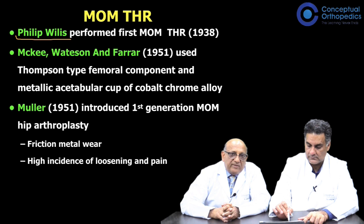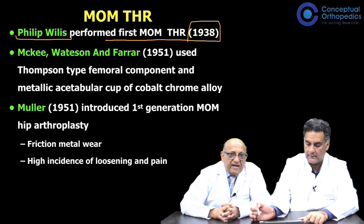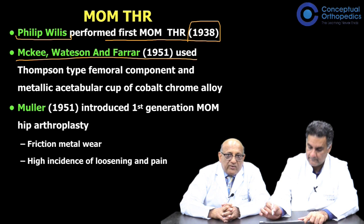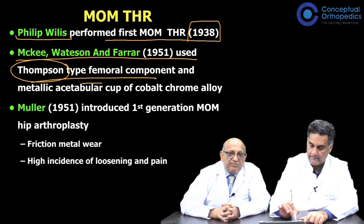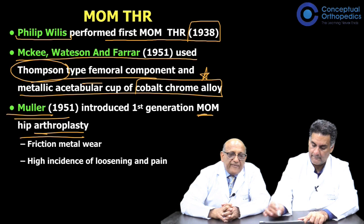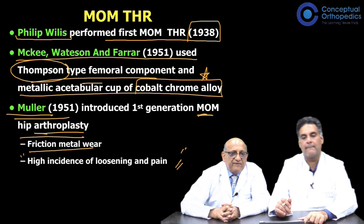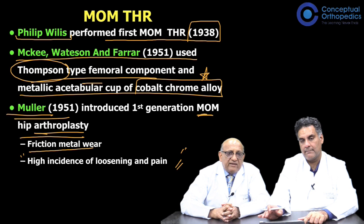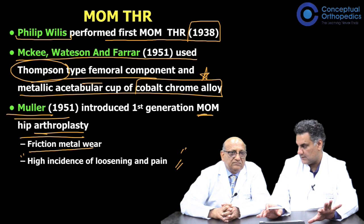Philip Wiles, again from England, performed the first metal-on-metal hip replacement in 1938. Then McKee, Watson, and Farrar in 1951 took a step forward, using a Thompson-type femoral component and a metallic acetabular component made of cobalt-chrome alloy. Müller from Switzerland in 1951 also introduced the first-generation metal-on-metal hip replacement, but these did not sustain because the quality of metal was poor, resulting in very high friction, a high incidence of loosening and pain, and were subsequently abandoned.